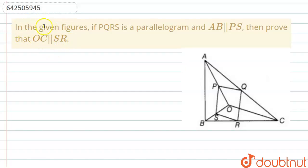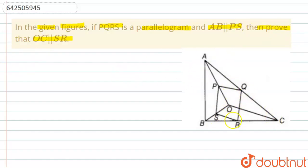Hello everyone. The question is: in the given figure, if PQRS is a parallelogram and AB is parallel to PS, then prove that OC is parallel to SR. So what we have to prove here is OC is parallel to SR, given that PQRS is a parallelogram and AB is parallel to PS.